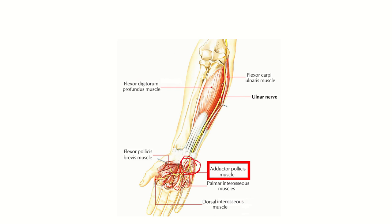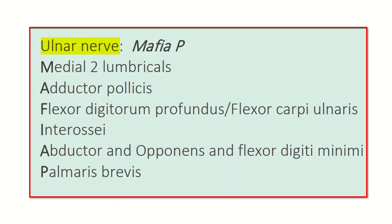We can see two branches here: one is deep and one is superficial. Going back, we can identify it as the ulnar nerve. The adductor pollicis muscle is compromised due to loss of function of the deep branch of the ulnar nerve. The ulnar nerve supplies these muscles.